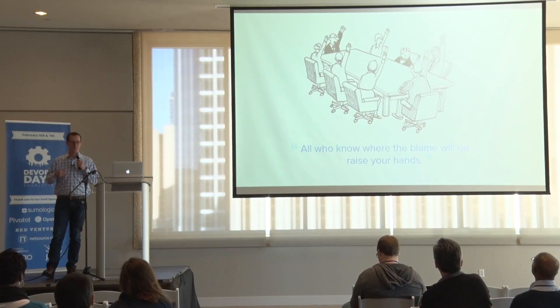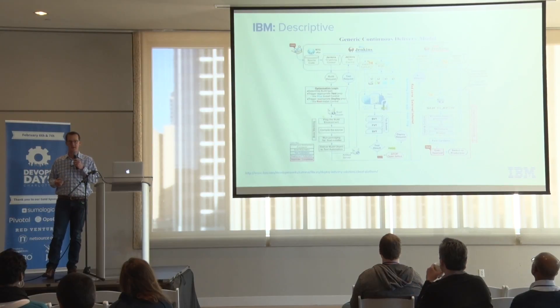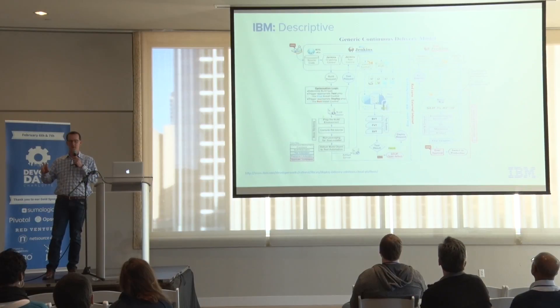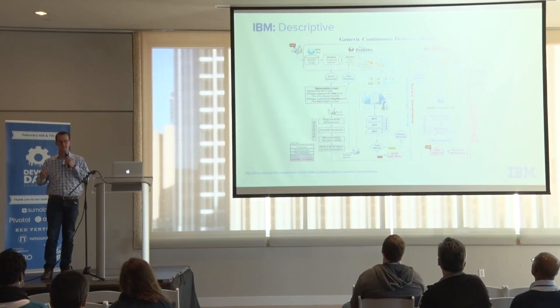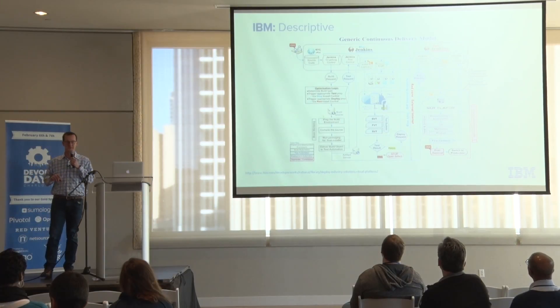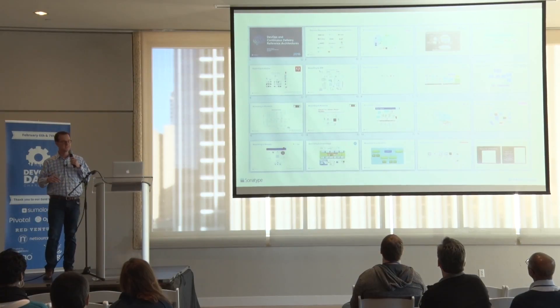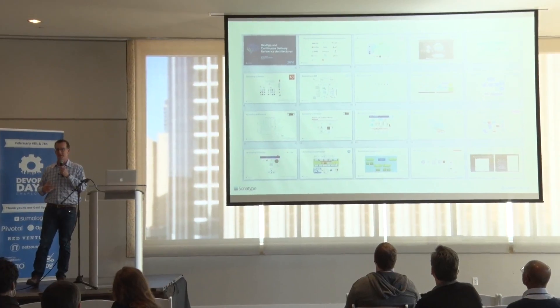When you look at a DevOps or continuous delivery reference architecture, you can begin to see how the work is being done — what's automated within tools, what's human-centric, and how this reflects the work going on within your own organization and the choices you're making. For this reason, I put together a set of continuous delivery and DevOps reference architectures that we can all learn from.